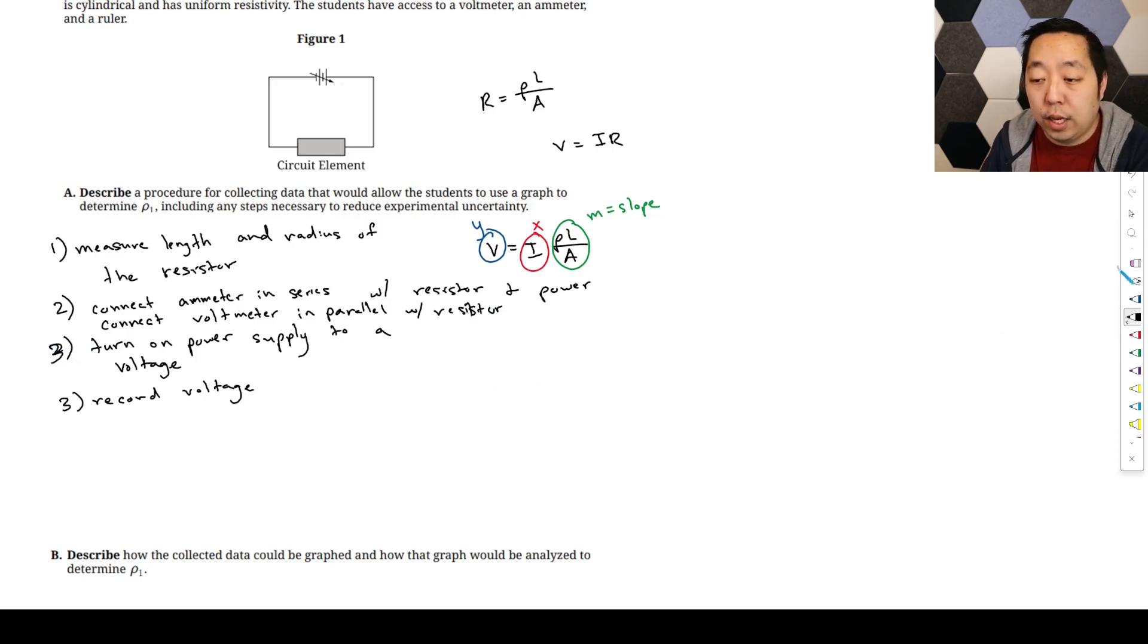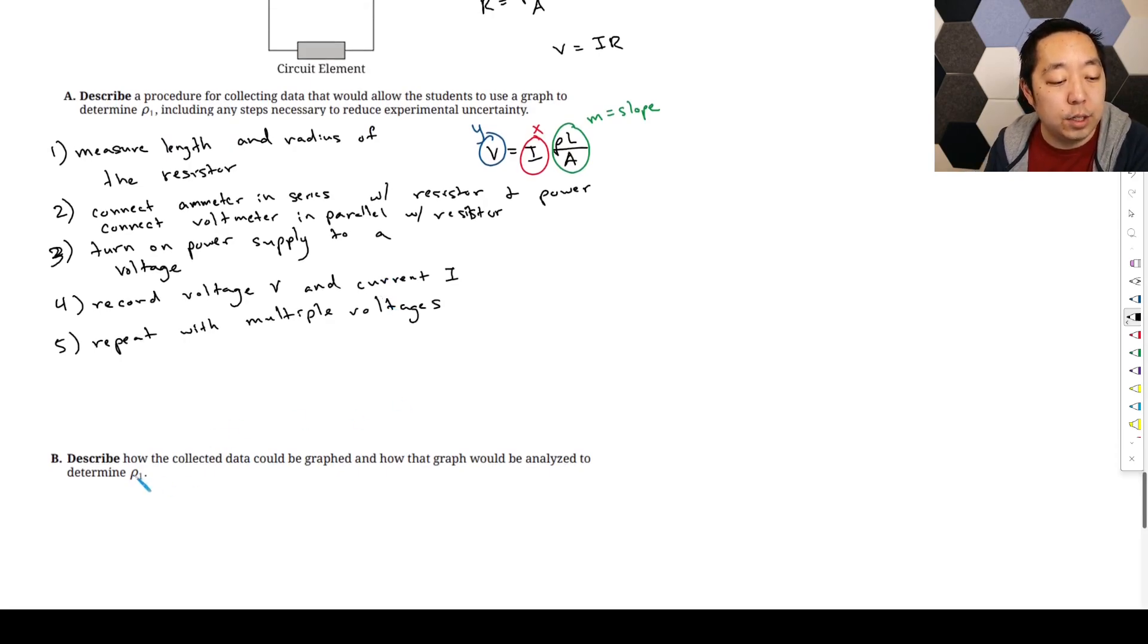Then we're going to turn on the power supply, run some current through it. We're going to record the voltage V and current I, and we want to vary the quantity, so we're going to repeat with multiple voltages. Then plot the voltage versus the current and draw a line of best fit.